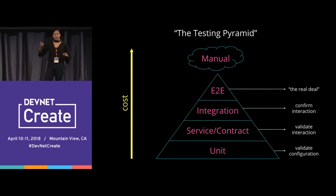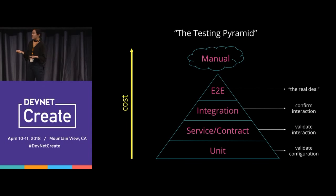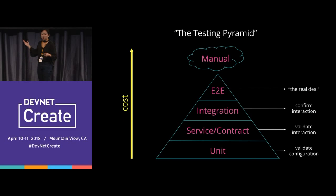Why is it shaped like a pyramid? The idea is that as you go up the pyramid, the cost of running that test increases in both time, money, and resource. When you actually run your end-to-end test, that's very expensive — you might need real devices. Versus unit tests, which you can try to do locally.